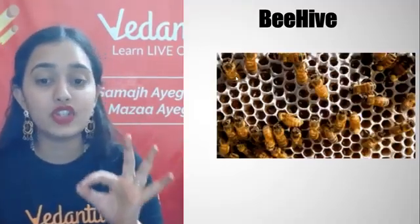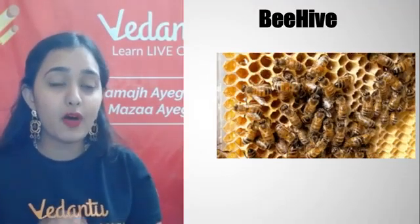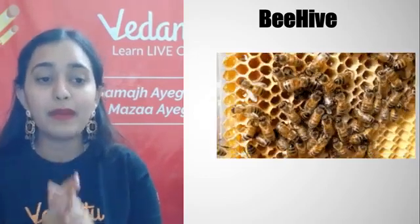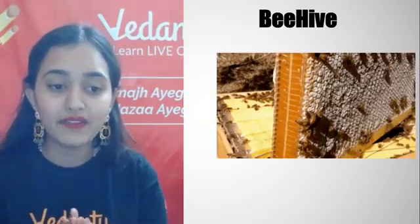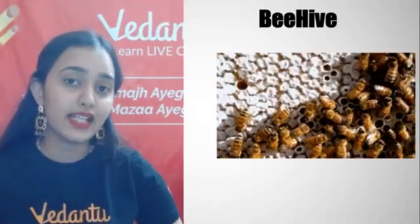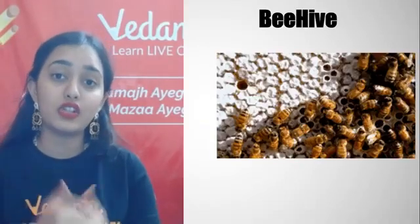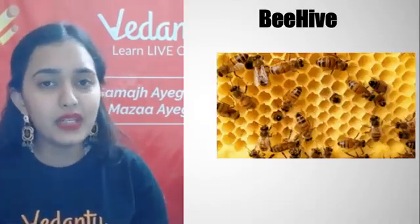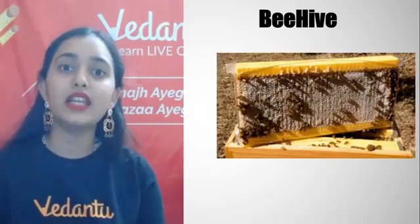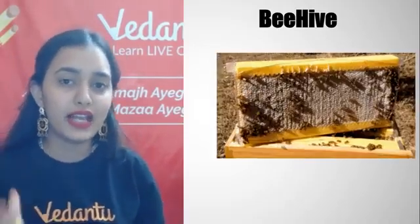The honeycomb — the main path — is made up of small hexagonal combs, closely packed and formed with hexagonal shape. Now, why hexagonal shape? Why not pentagon, square, or rectangle? Hexagonal banata hai — aur kyun hexagonal banata hai?